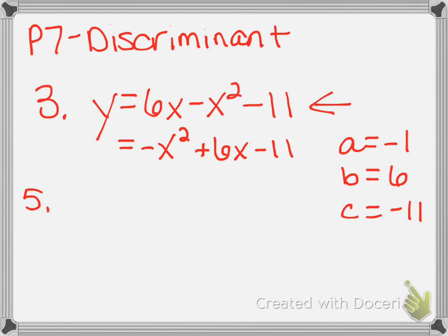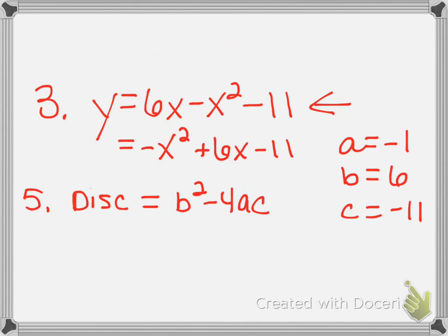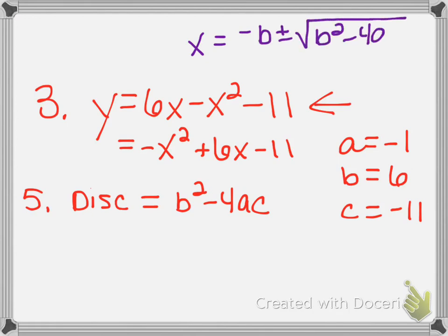Question 5 on the quiz just wanted the discriminant. The discriminant is just b squared minus 4ac. Just to remind you, the quadratic formula as a whole says x equals negative b plus or minus the square root of b squared minus 4ac, divided by 2a. It's this number underneath the square root that tells us the number and type of solutions we're going to have.